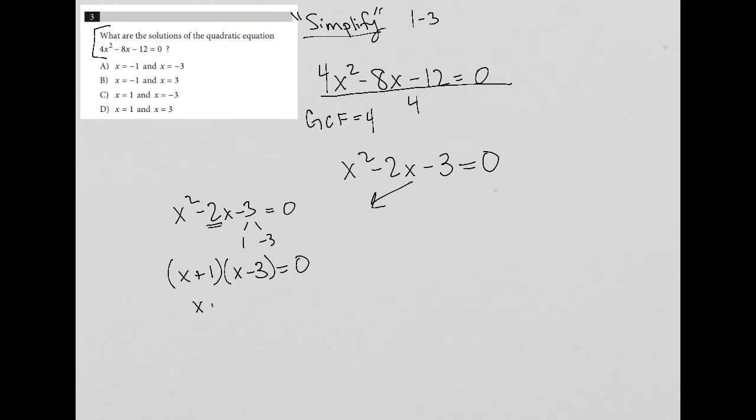And then I set each individual binomial equal to 0, so x plus 1 equals 0, x minus 3 equals 0, and therefore x equals negative 1, or x equals positive 3.